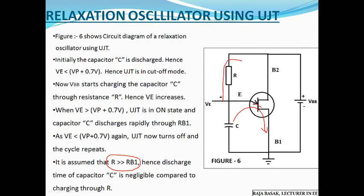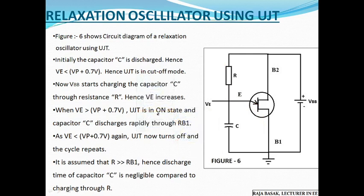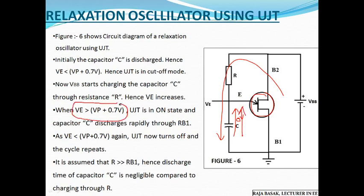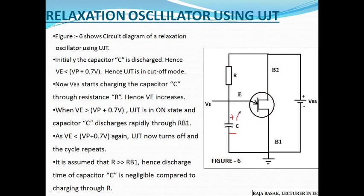When the UJT is ON, the discharge path resistance is very low compared to the charging resistance R. So the discharge time is much shorter than the charging time. When the capacitor voltage drops nearly to 0V, the UJT turns OFF again, and the capacitor begins charging through R once more. This cycle repeats continuously.